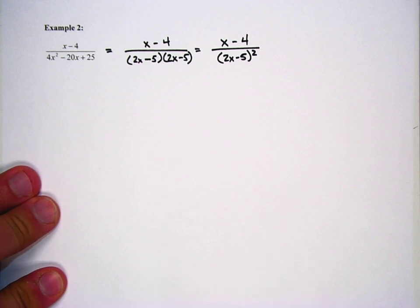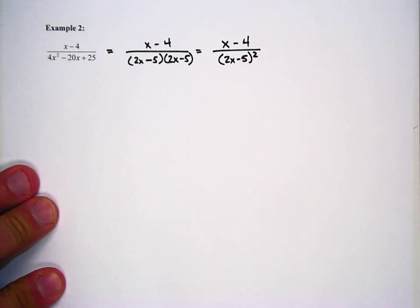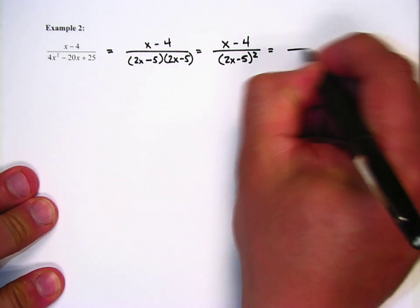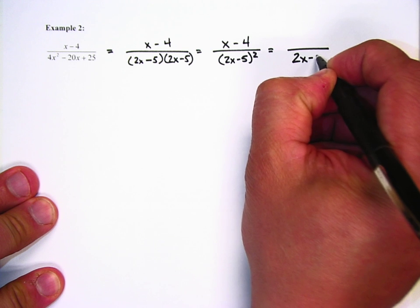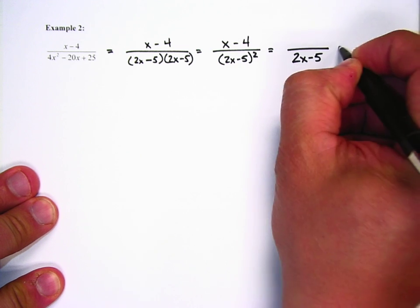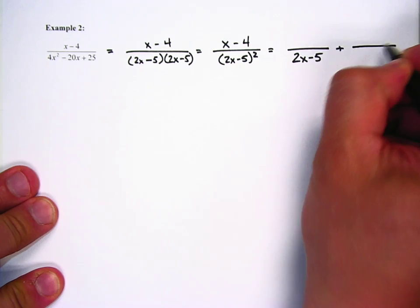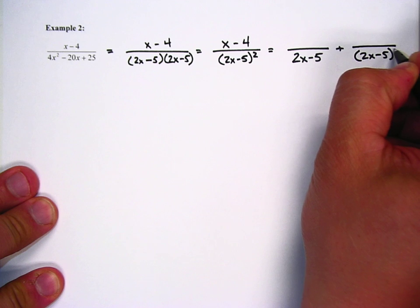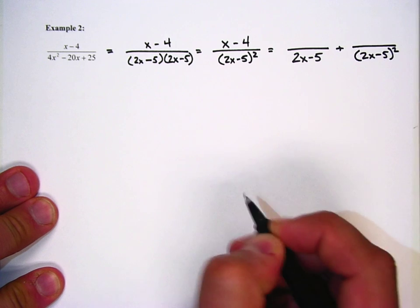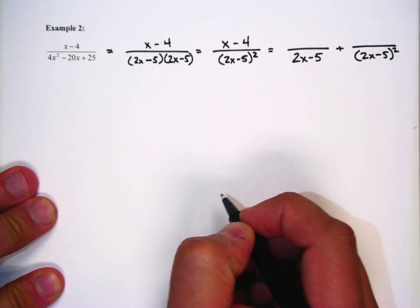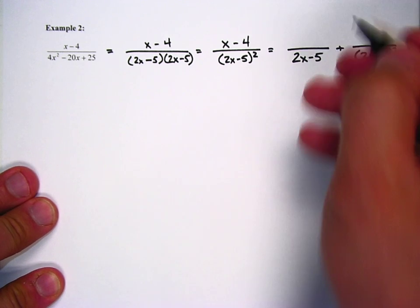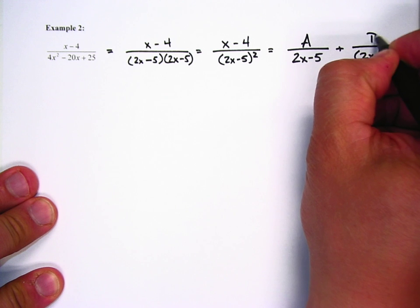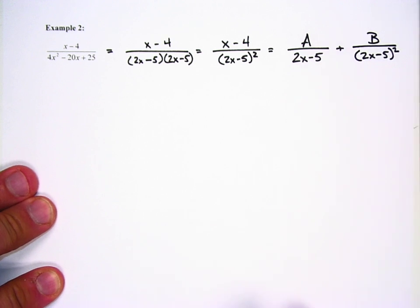So that's what we're going to set it up as. I have to first write it down to the first degree, then write it down to the second degree — 2x minus 5 squared. Both denominators are linear, so I'm just going to put A and B on top.